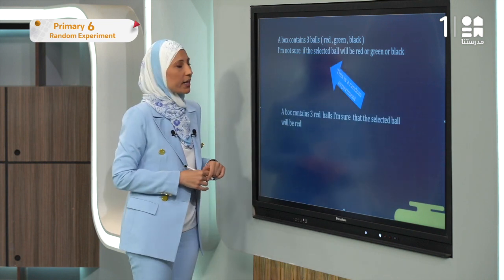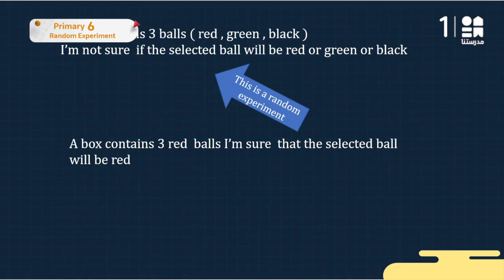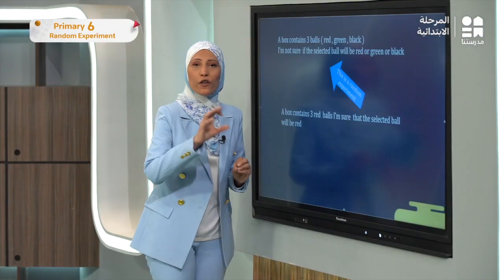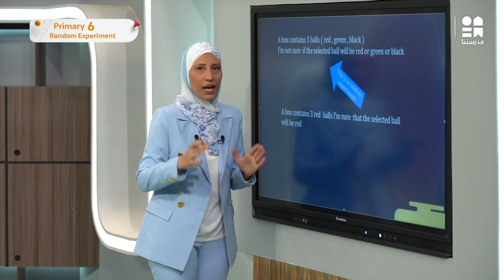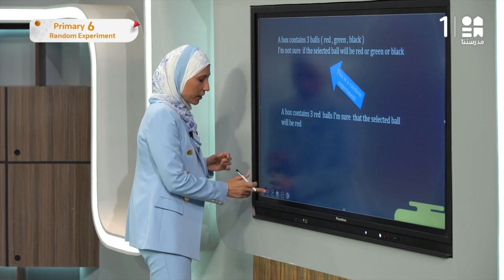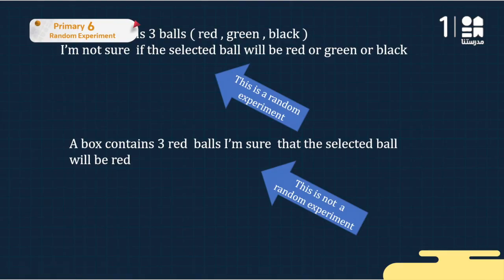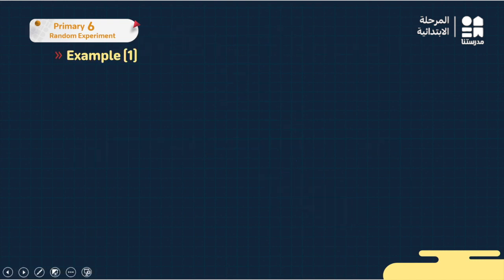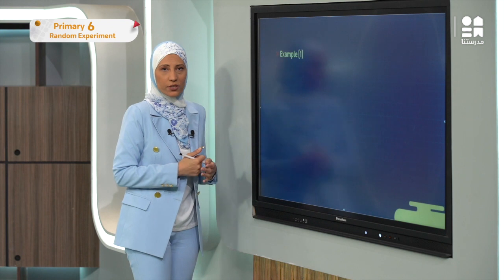The second example: a box contains three red balls. I'm sure the selected ball will be red because all three balls have the same color. So if I select any one of them, I will always get red. This is NOT a random experiment — a random experiment is one where I'm not 100% sure what I will get.